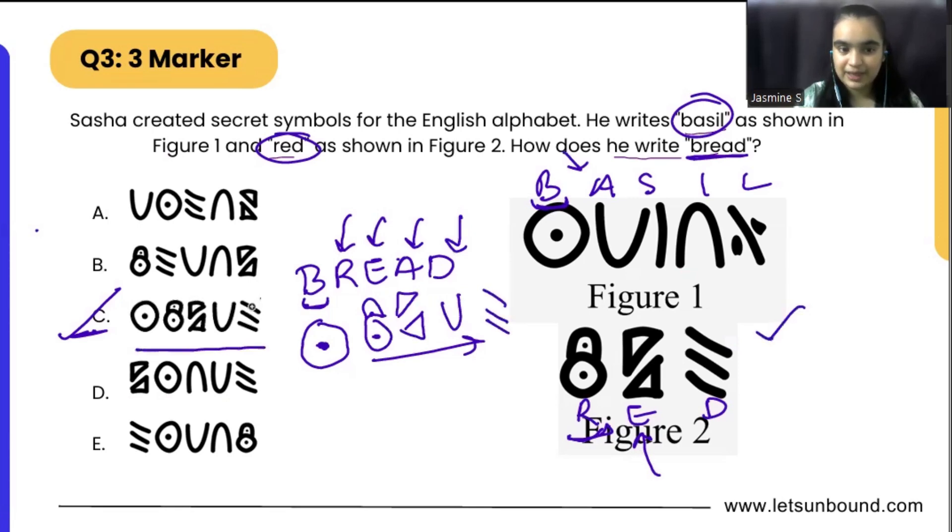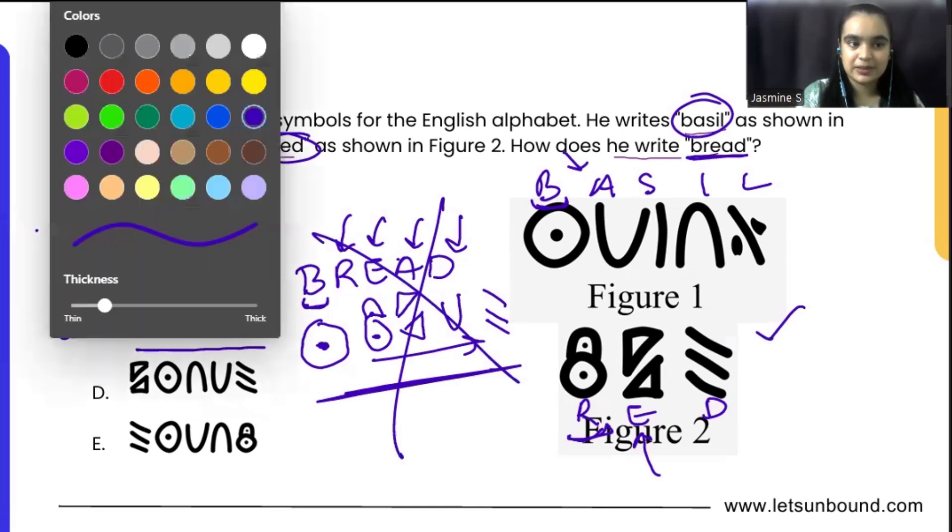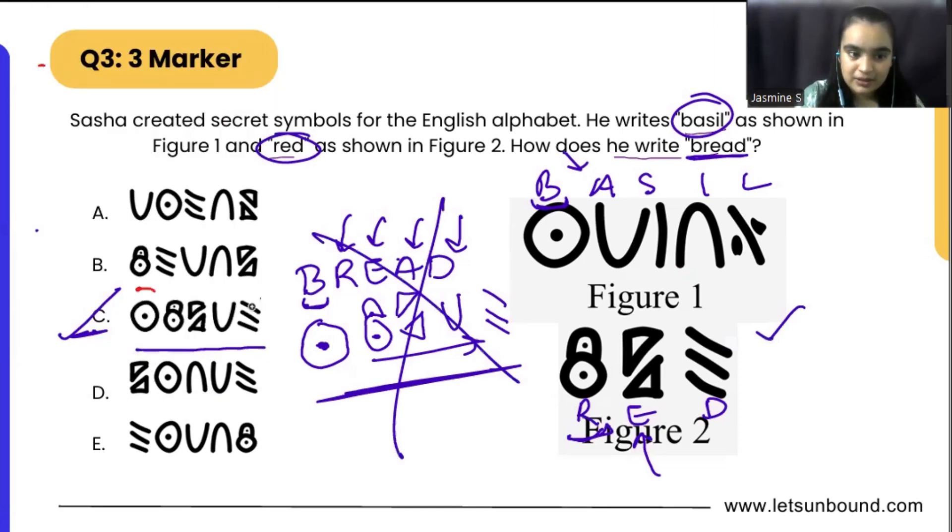It's just the same thing, but no need to do this in your paper. Just start with the first symbol for B and you will get your answer, because no other symbols are starting with that same symbol.